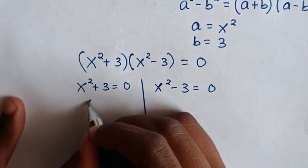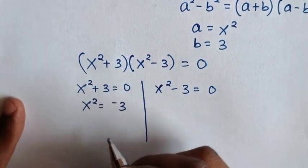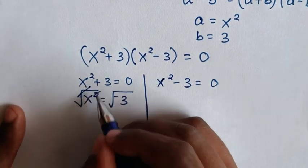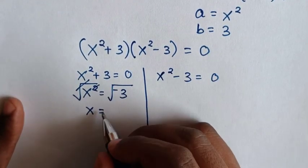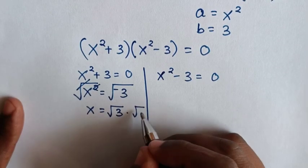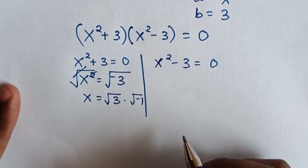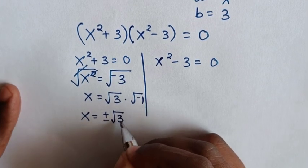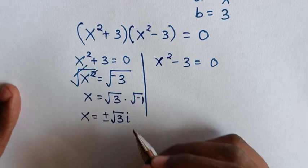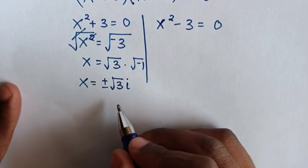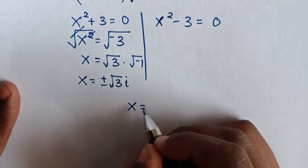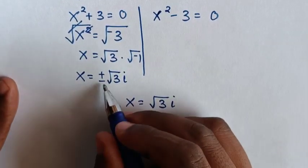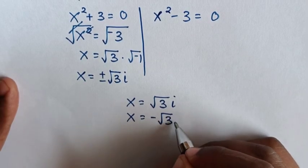From the first case, we take 3 to the right side, so x square is equal to negative 3. We apply square root on both sides — the square root cancels with the square. Then x is equal to plus or minus square root of 3 times square root of negative 1, which is i. So we have two values: x equals positive square root of 3 times i, and x equals negative square root of 3 times i.